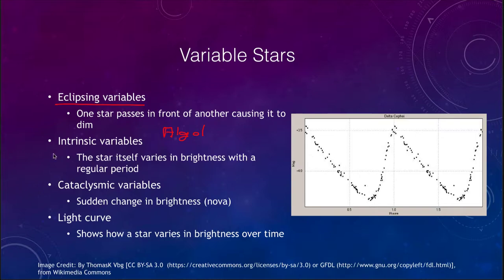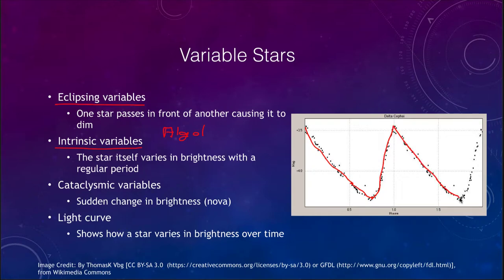There are also intrinsic variables. These are the ones we're going to look at more closely, because the star itself varies in brightness with a regular period. A Cepheid variable, for example, will vary in brightness — going fainter and fainter, then quickly rising brighter again — with a very regular, repeating period. These are the ones we want to use for determining distances.